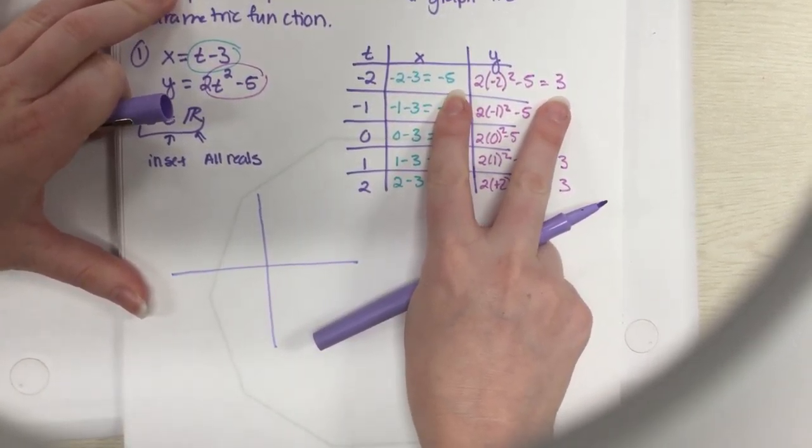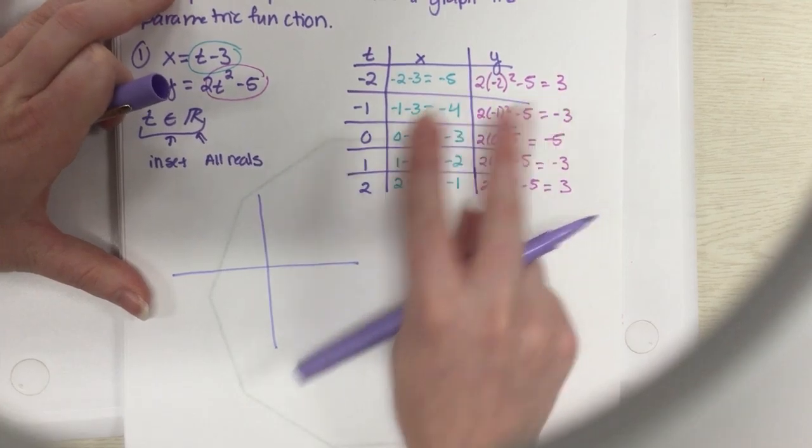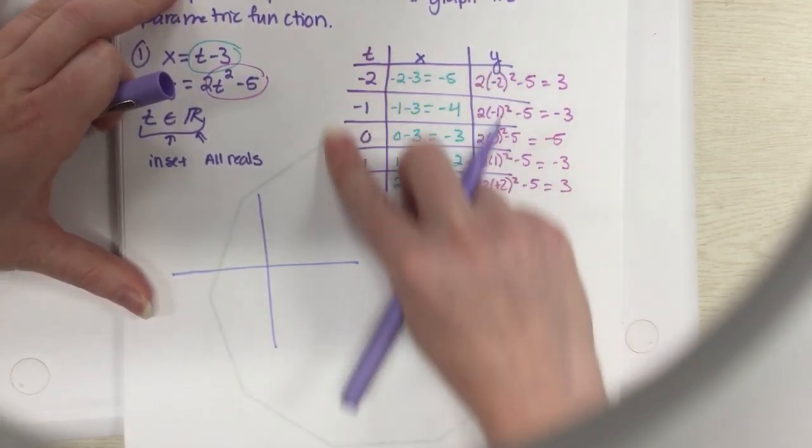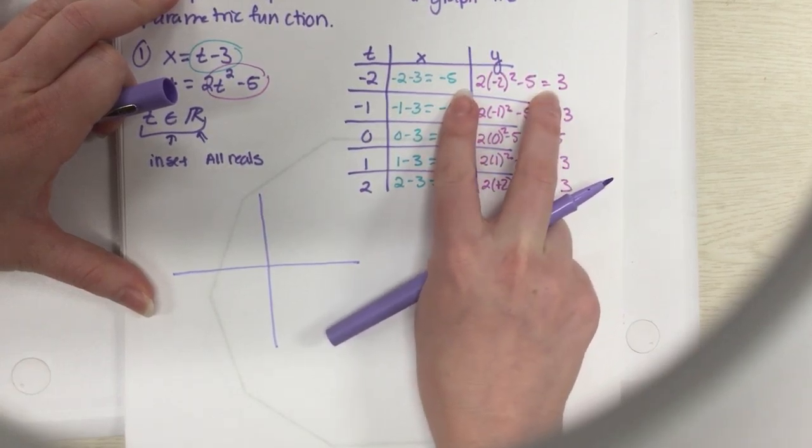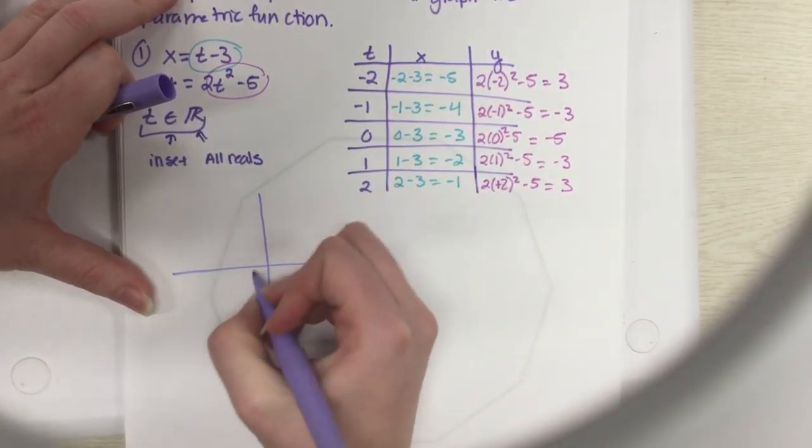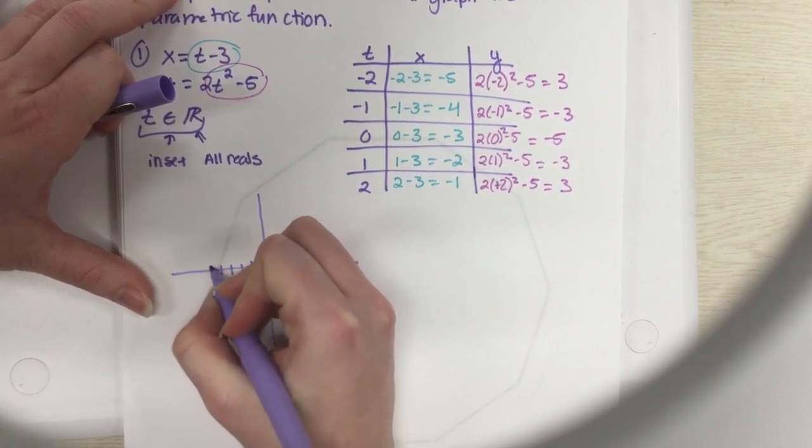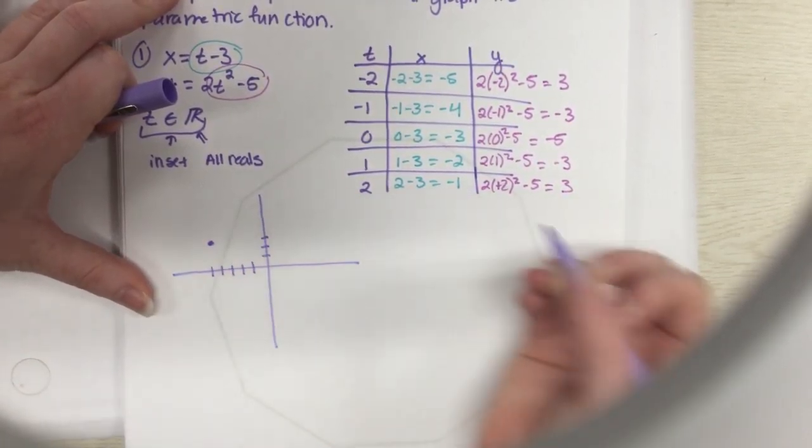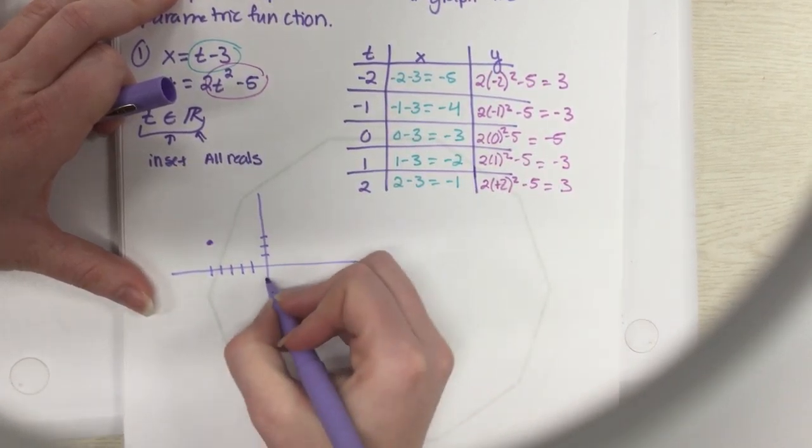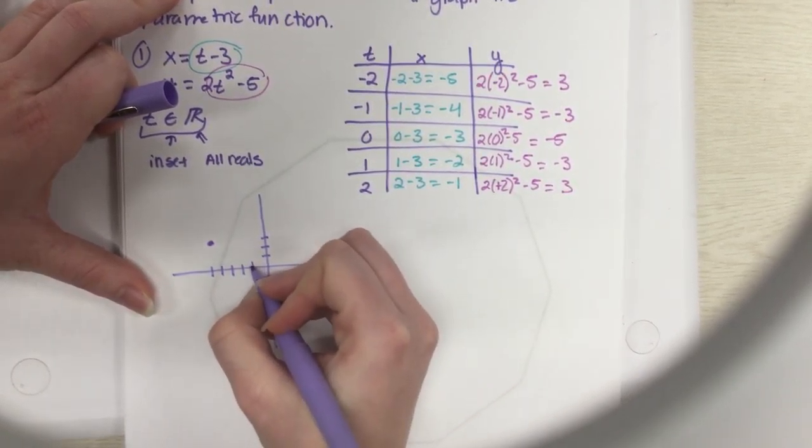We're going to go ahead and plot this graph. Just kind of sketch your graph out. So my first point I'm going to plot x and y, it's just like you plotted back in middle school. You're no longer caring about the t values because you plug the t values in to get your x and your y. My first plot is negative 5, positive 3.